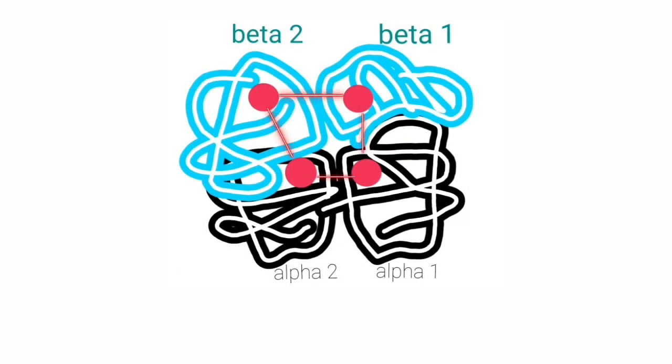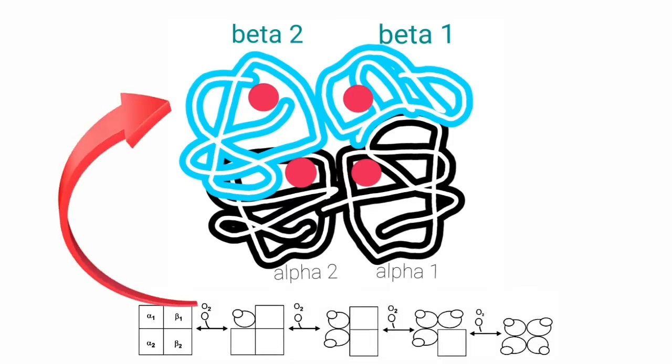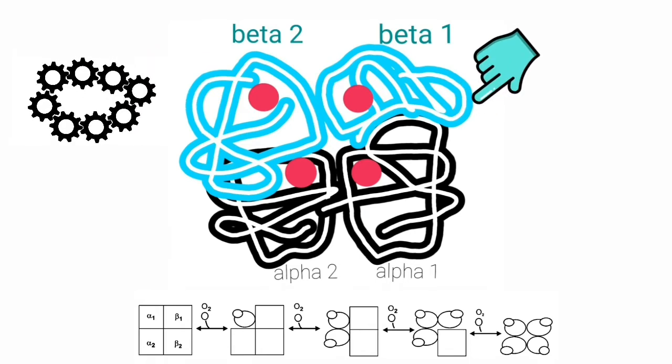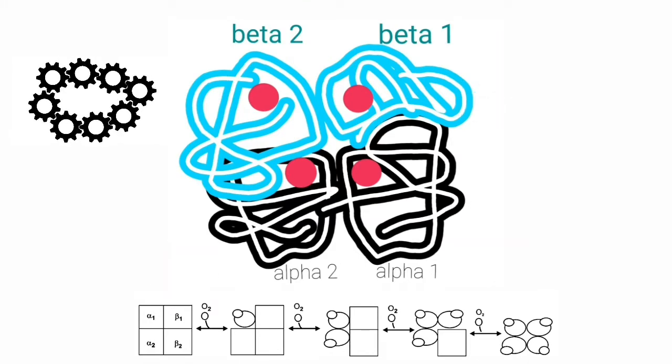During heme-heme interaction, heme groups of hemoglobin do not interact directly. But when oxygen binds to heme, it leads to structural changes in the globin chain surrounding the heme. These structural changes are mechanically transmitted to other globins in the hemoglobin. These changes carry the signal that facilitates the gain of oxygen by other hemes.